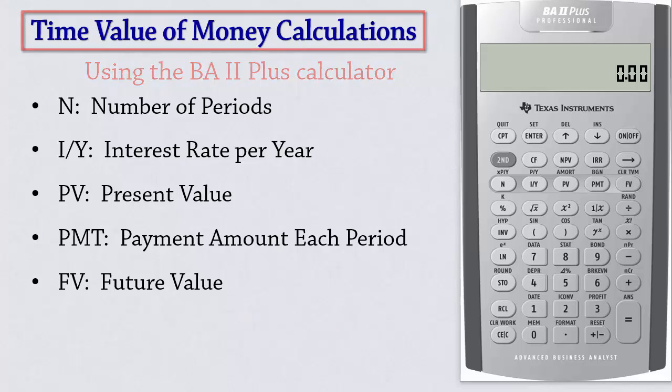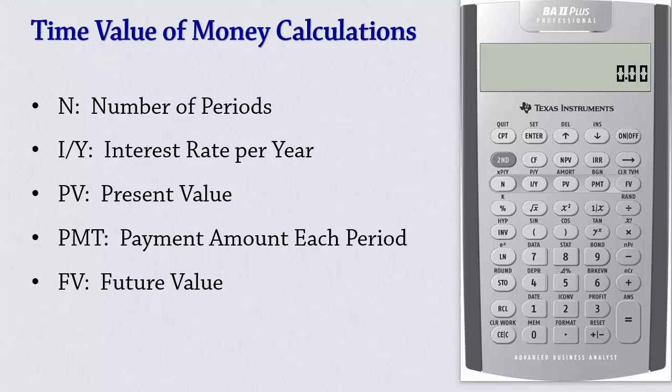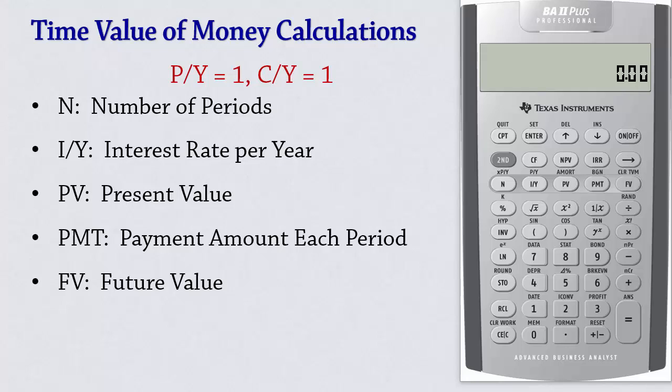In this tutorial, we will only be using the time value of money keys. We will not be changing PY and CY values. PY and CY will be left at their default values of 1.